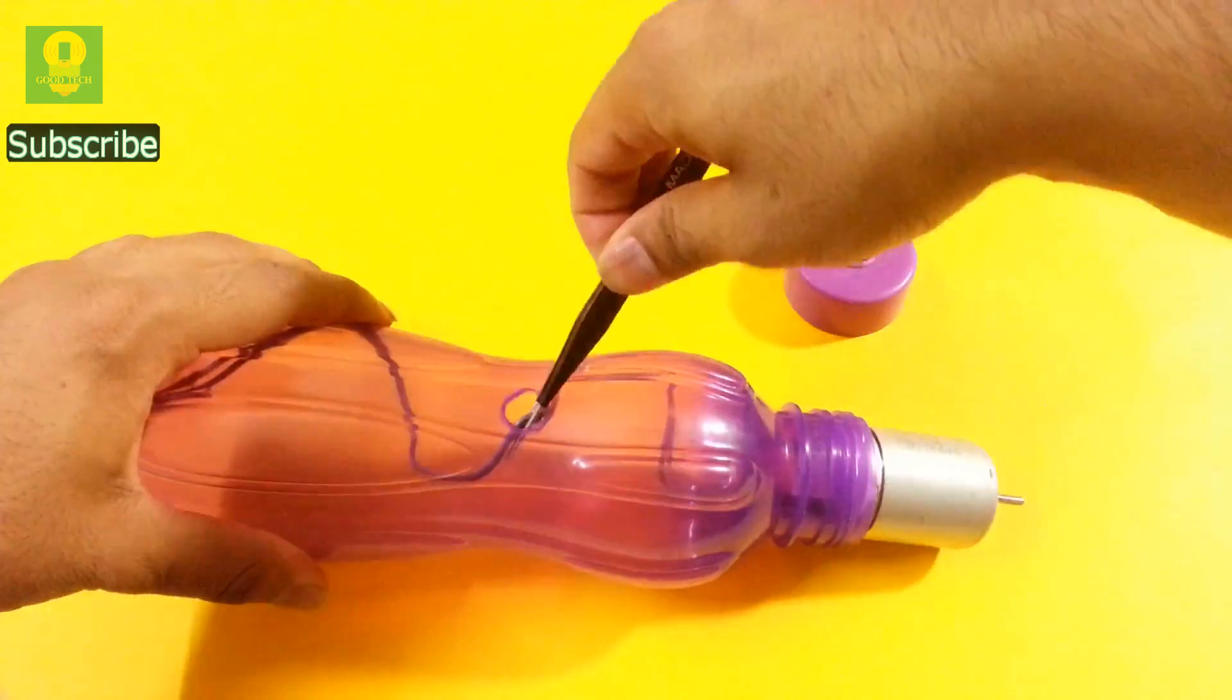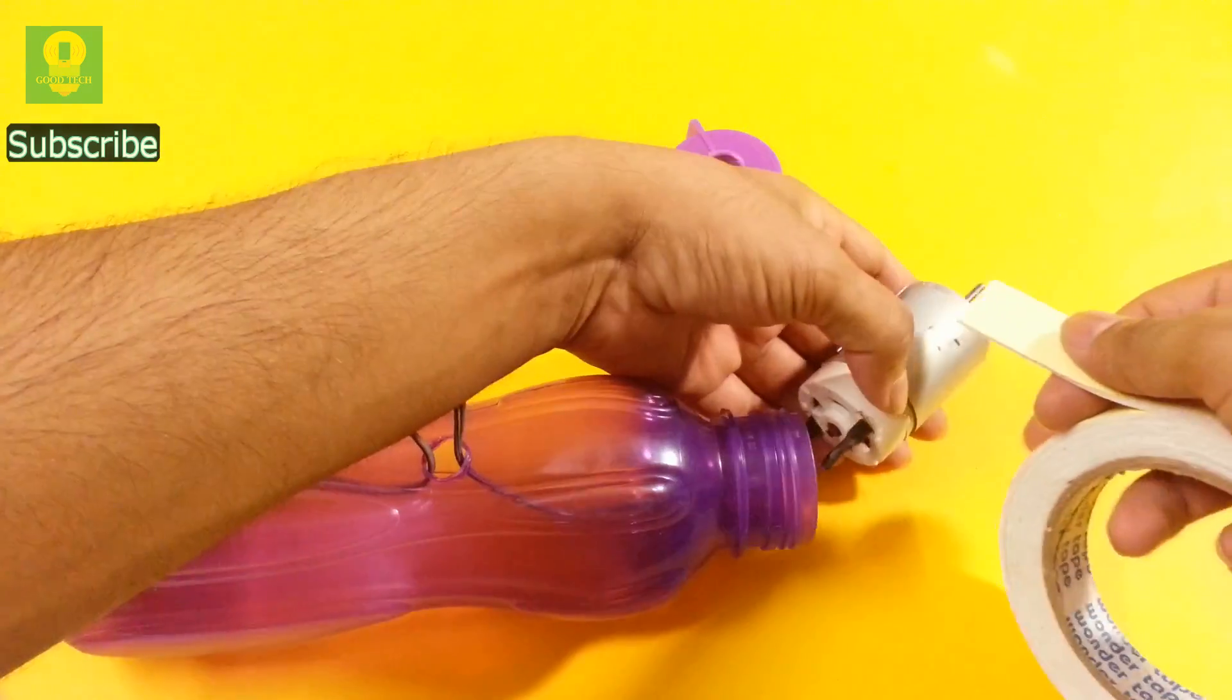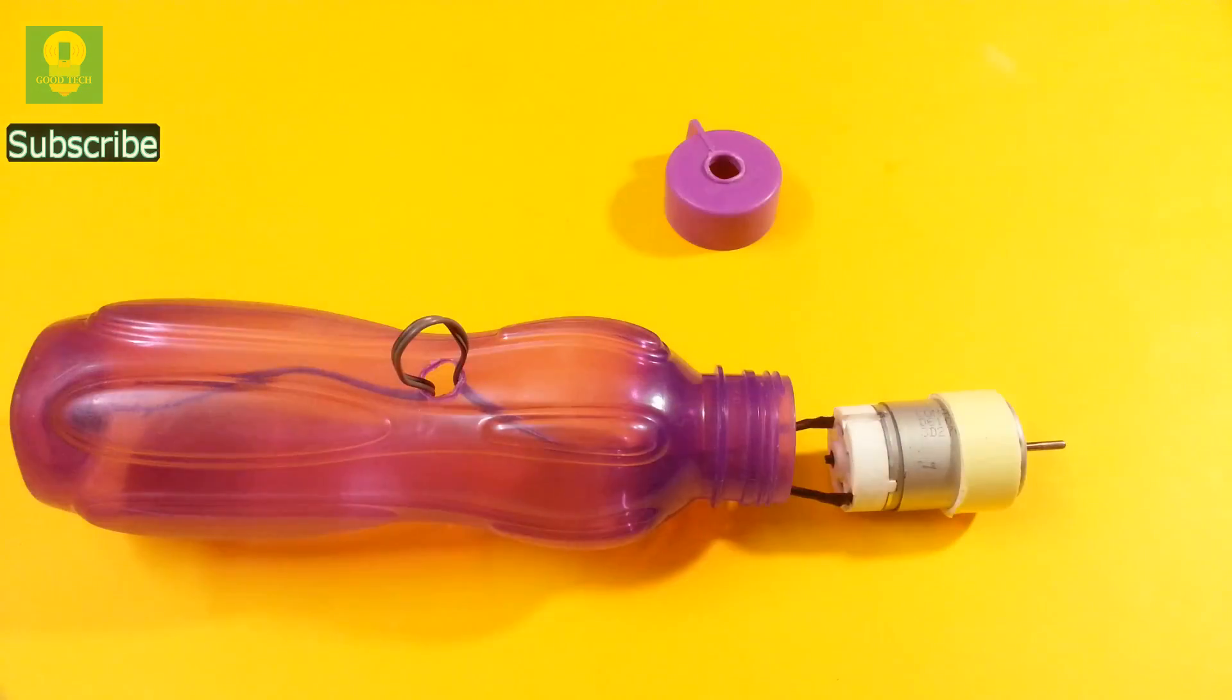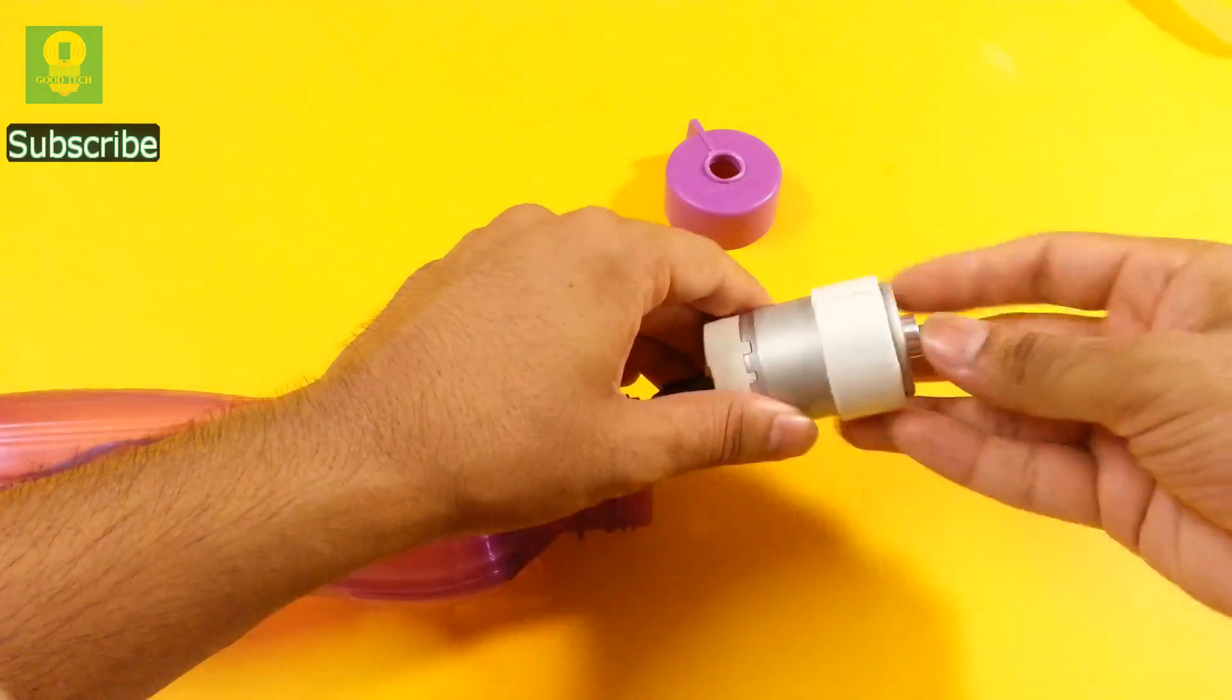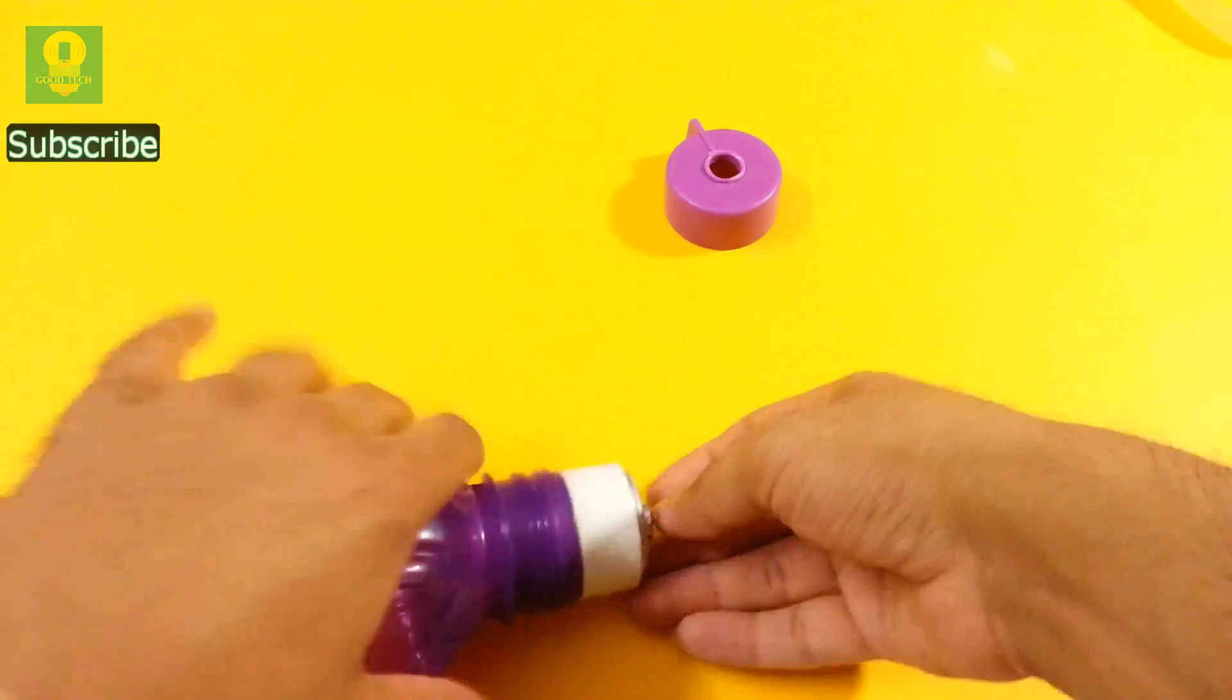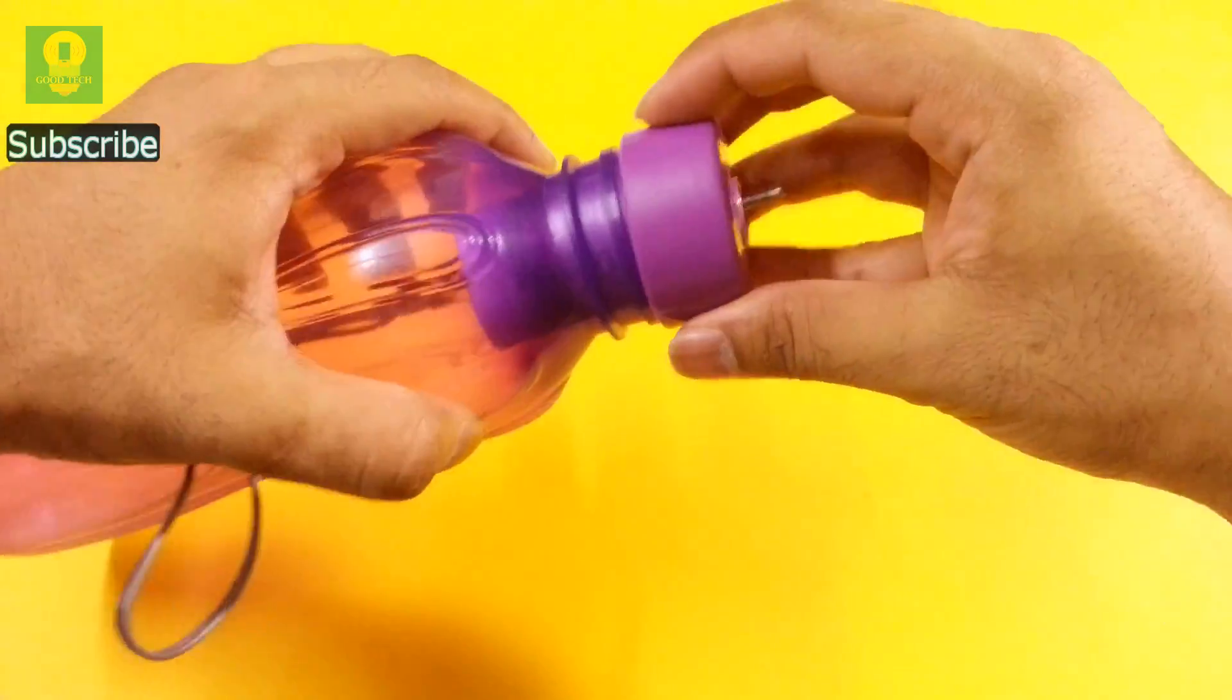Using tweezers, pull the wire out from the center hole. Apply some double sided tape around the motor. Fix the motor inside the mouth of the bottle. Tightly close the cap.